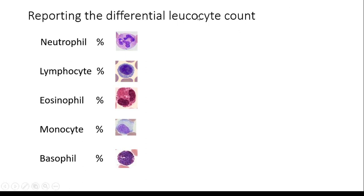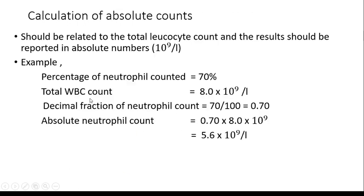Report in the differential leukocyte count. The differential count is expressed as the percentage of each type of cell. Calculation of absolute counts should be related to the total leukocyte count and the results should be reported in absolute numbers, 10 to the power 9 per liter.